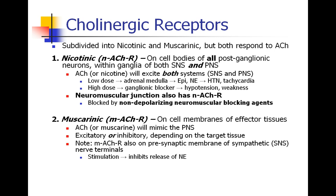The second receptor is the muscarinic receptor, which is found on the cell membranes of the effector tissues. Acetylcholine or muscarine will mimic the peripheral nervous system because they activate the target organs of the parasympathetic system. Therefore, these substances can be excitatory or inhibitory — it just depends on the target tissue. Referring back to the chart from the last lecture, we can see how acetylcholine secreted by the parasympathetic system has excitatory or inhibitory effects depending on the target tissue.